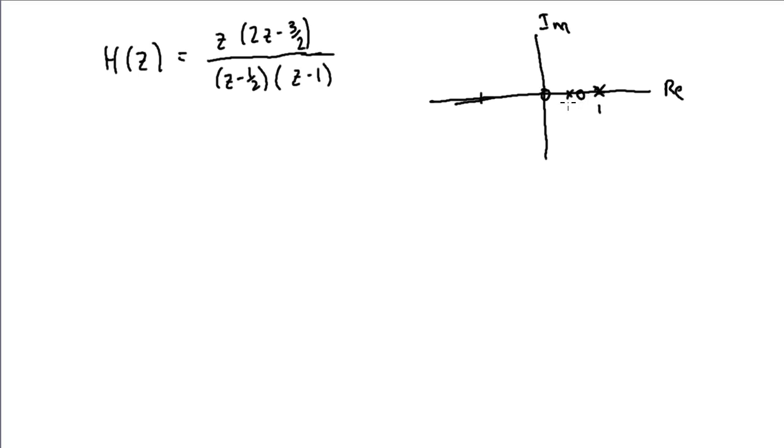We will find that when we discuss stability of our discrete time sequences that a pole term like this corresponds to a sequence of 1 half to the n times u of n, that's a decaying sequence, and so that's going to be a sequence that dies away. This actually would lead to a u of n term, a unit step term, that doesn't die away.